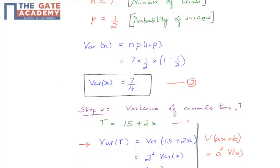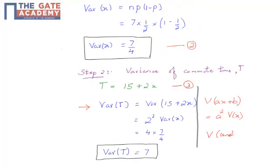We know that variance of AX plus B equals A squared times variance of X, where A and B are constants. Remember, variance of a constant is always zero. So variance of T equals 2 squared times variance of X. Since variance of X is 7/4, I get variance of T equals 7.